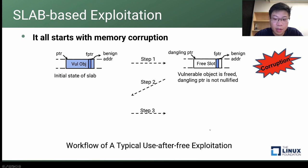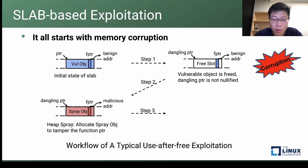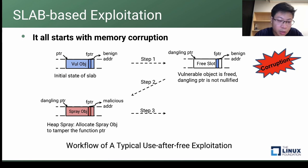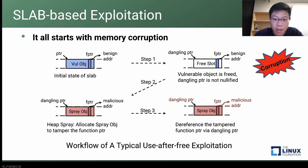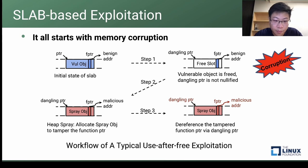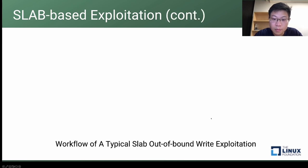In the second step, the adversaries perform heap spray to allocate an object to the same slot. The vulnerable object which generates corruption overlaps with this spray object. As a consequence, the function pointer is overwritten to a malicious address. Finally, in the third step, the adversaries dereference the tampered function pointer via the dangling pointer and thus hijack the kernel execution.